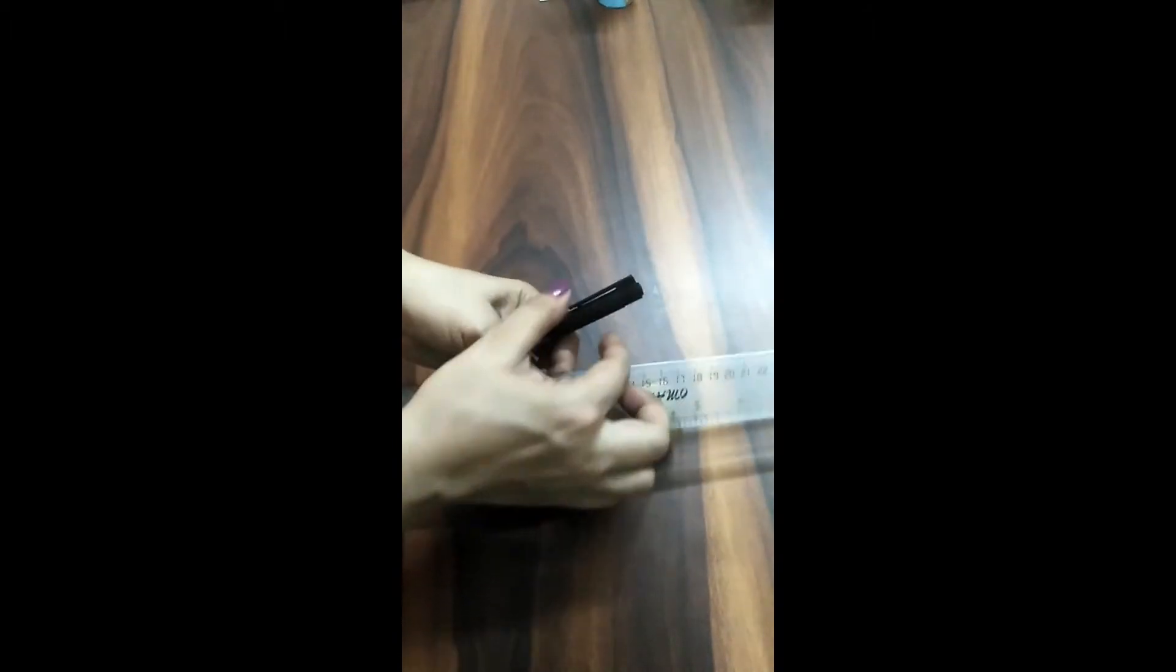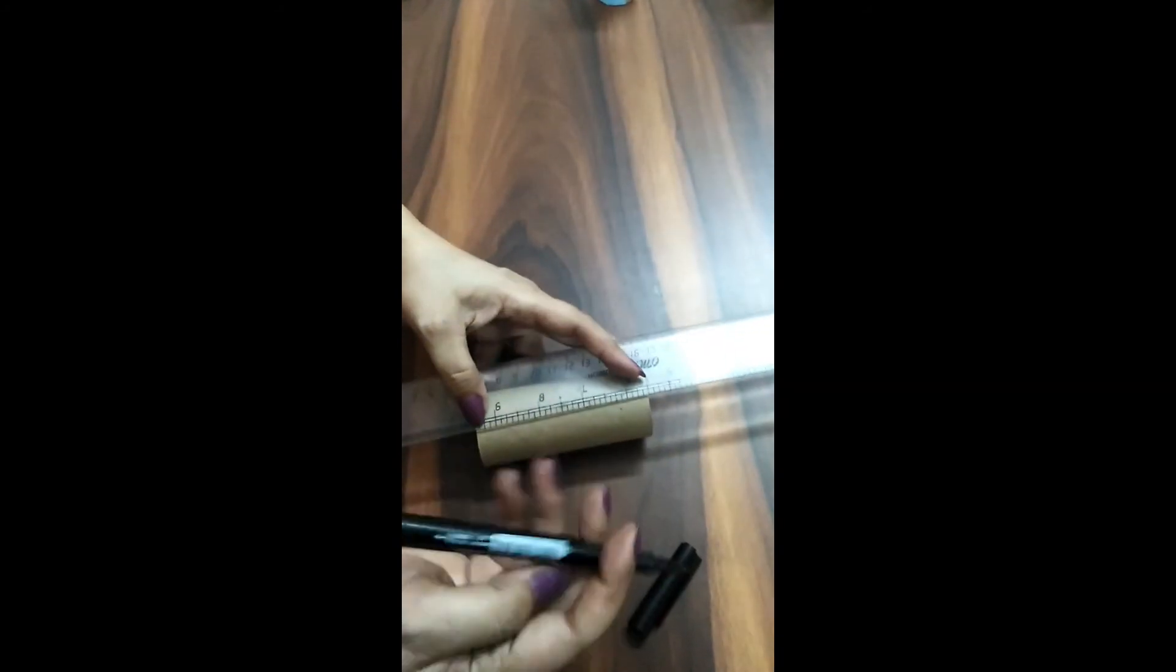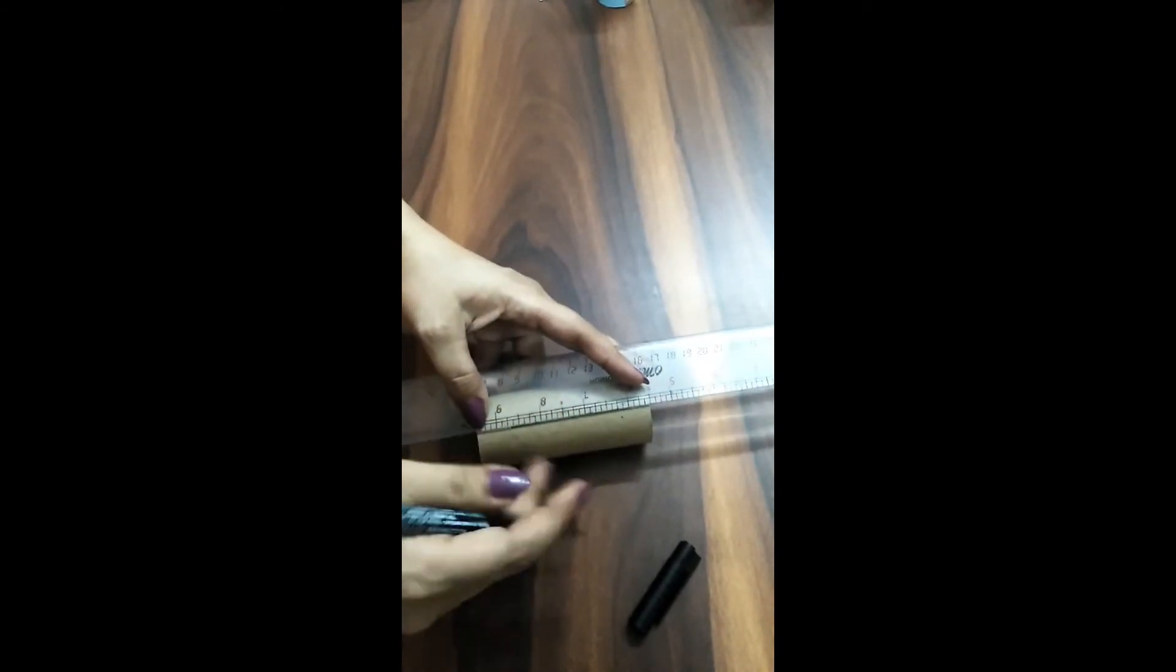For this you need a waste toilet roll and with the help of the scale and marker you need to draw the lines and then you need to cut along those lines using a cutter.